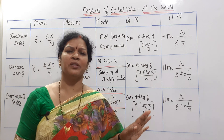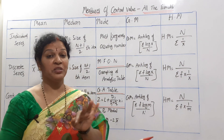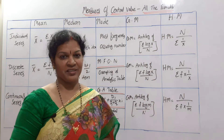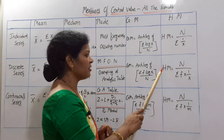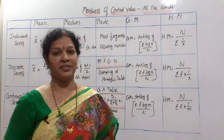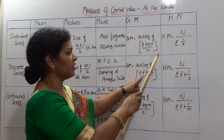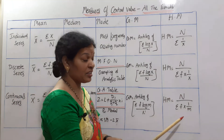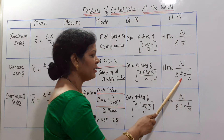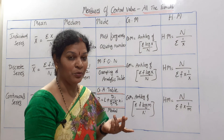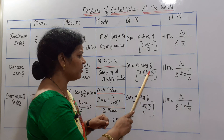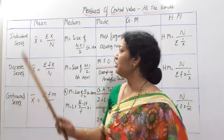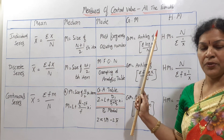Harmonic mean is also easy — it mainly uses reciprocals, reversing the arithmetic mean by dividing 1 by x. Individual series: HM = n / Σ(1/x). Discrete series: HM = n / Σ f·(1/x) — frequency is added just as in geometric mean. Continuous series: HM = n / Σ f·(1/m), where x turns into mid value m, same pattern as geometric mean.